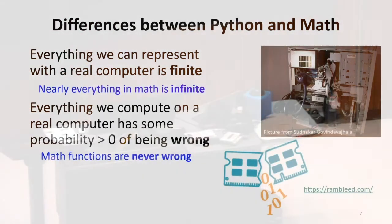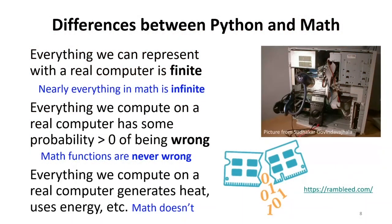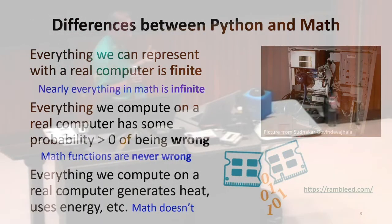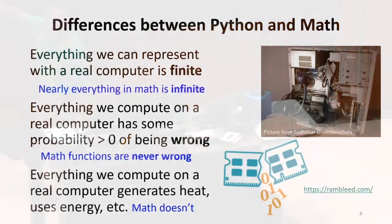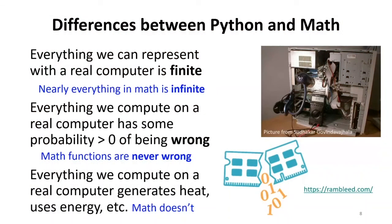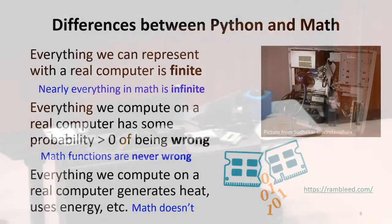And related to that, the final one I'll mention, there's no way to do computation with physical devices like computers without consuming energy, without generating heat, without doing things that have external consequences on the real physical world. Math does not have that problem. We can do infinitely many math additions without consuming any heat. Of course, if we're actually doing them or we're thinking about them, using your brain is consuming lots of energy, maybe generating heat as well. But that's not the abstract world of mathematics. The abstract world of mathematics, none of these things use any energy or heat.